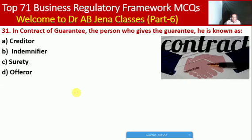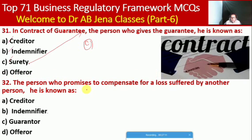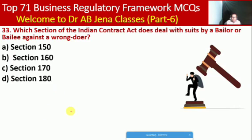Next MCQ: in a contract of guarantee, the person who gives the guarantee is known as what? Whether creditor, indemnifier, security/surety, or offeror. Here C is the right option — the person is called a surety. Next MCQ: the person who promises to compensate for a loss suffered by another person is known as what? Whether creditor, indemnifier, guarantor, or offeror. Here B is the right option — he is called an indemnifier. Next MCQ: which section of the Indian Contract Act deals with suits by a bailor or bailee against a wrongdoer? Whether Section 150, 160, 170, or 180. Here D is the right option — Section 180.